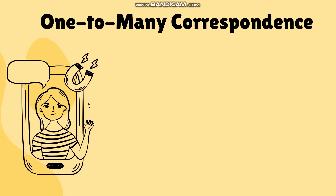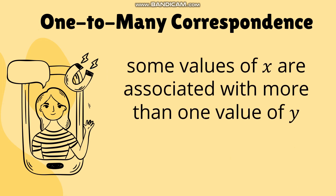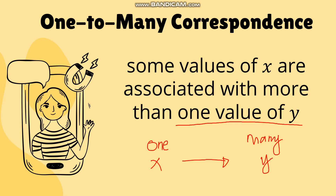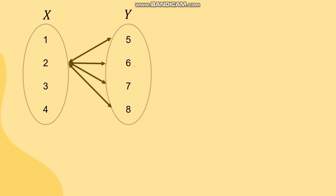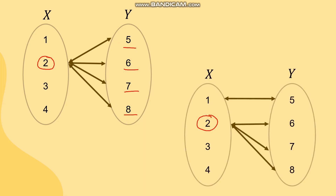In one-to-many correspondence, one value of x is associated with more than one value of y. There is only one x, but it gives many values of y. For example, if x equals 1, it can give y values of 5, 6, 7, or 8. In another example, if x equals 2, it can give y values of 6 and 7. That is one-to-many correspondence.